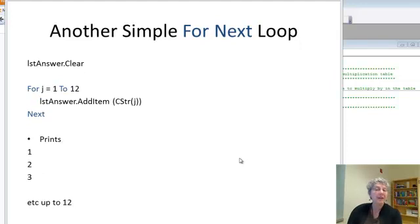Okay, here's another example. So I'm clearing my answer box and then I'm doing a loop for j equal 1 to 12. But this time instead of reading an element to print, I'm printing j, converting it to a string and printing it.